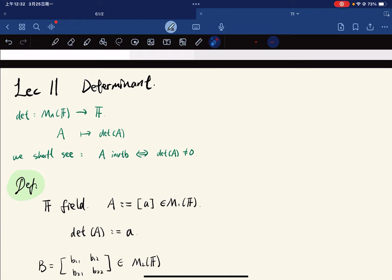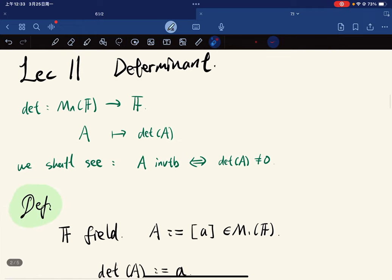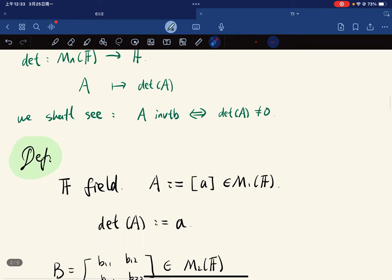Okay, so let's just get through the determinants real quick. The determinant is basically a function that takes a matrix to a field element. And we shall see that A is invertible if and only if the determinant is non-zero.